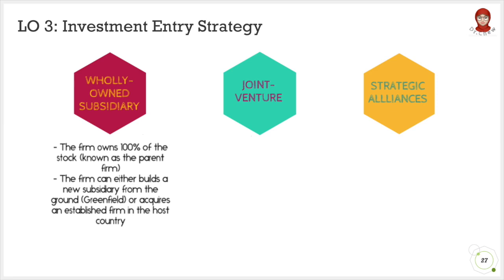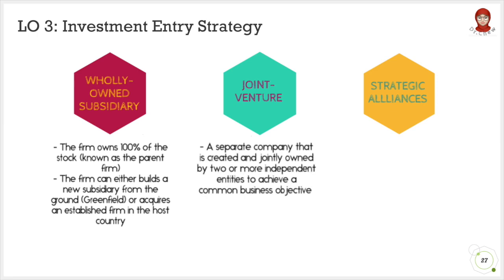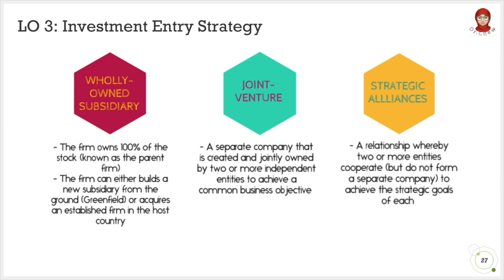Under wholly-owned subsidiary, the firm owns 100% of the stock, known as the parent firm. It can be established by forming a new subsidiary from the ground or by purchasing an existing company. Joint venture refers to a separate company created and jointly owned by two or more independent entities to achieve an objective. For strategic alliances, two or more entities cooperate but do not form a separate company, in order to achieve the strategic goals of each.